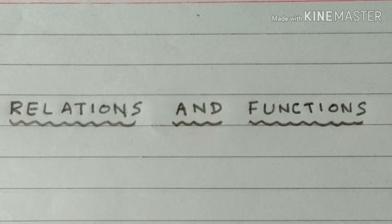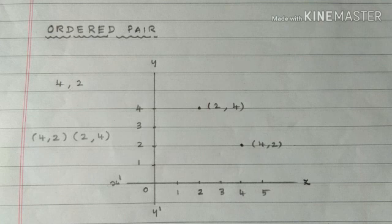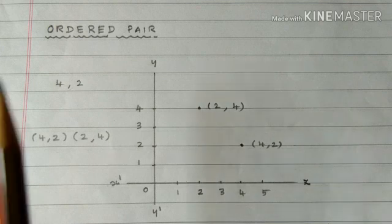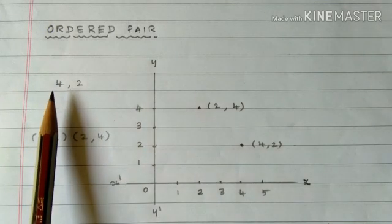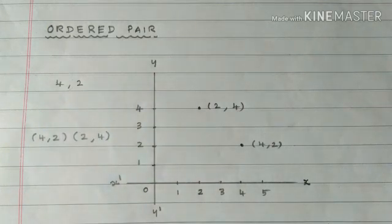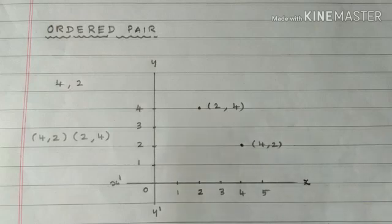Relation involves pair of objects in a particular order — that is, an ordered pair. An ordered pair is a pair of elements used only in a specific order. For example, (4, 2) is a point in a graph. The first element always denotes the x-coordinate and the next element always denotes the y-coordinate, so 4 is the x-coordinate and 2 is the y-coordinate.